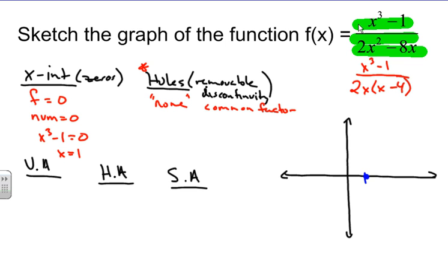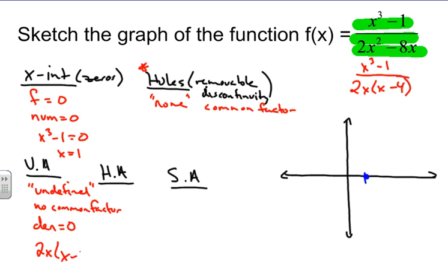For vertical asymptotes, these are also undefined values, like holes. However, unlike holes, there is no common factor — we're looking for undefined values. Fractions are undefined when the denominator equals 0. So we take the factored denominator, set it equal to 0, and identify vertical asymptotes at x = 0 and x = 4. I'll draw those vertical asymptote lines on the graph.